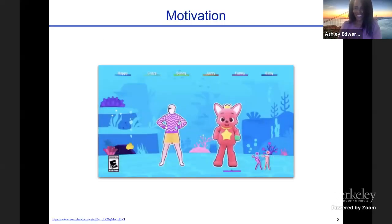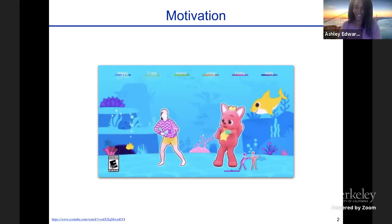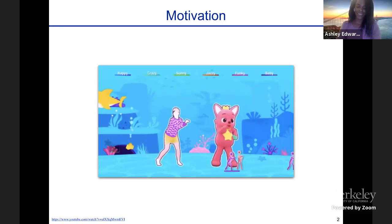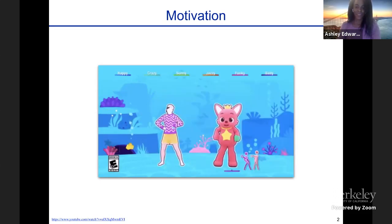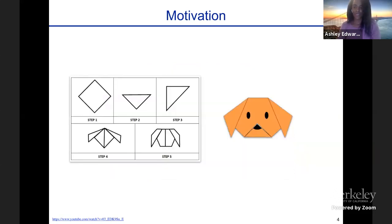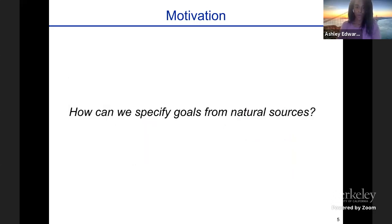As humans, we're very lucky to be able to learn from many different sources of information. For example, we can learn to dance by playing video games, or to cook by watching YouTube videos, or make origami diagrams by studying different figures. One interesting question we should ask is: how can we allow agents to learn from sources such as this? If we can figure this out, it might allow us to train agents using the vast amount of information that's available.